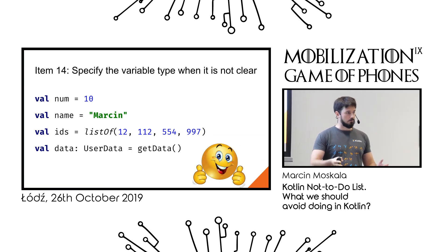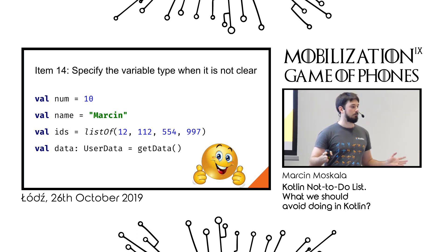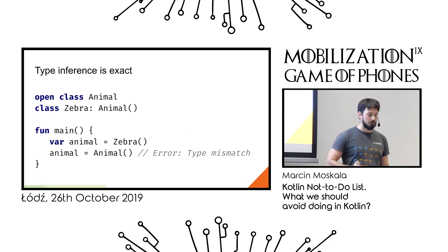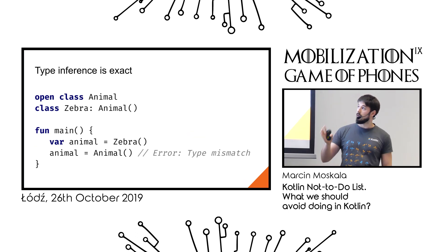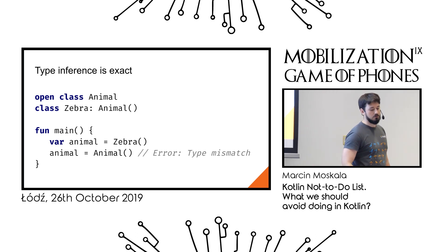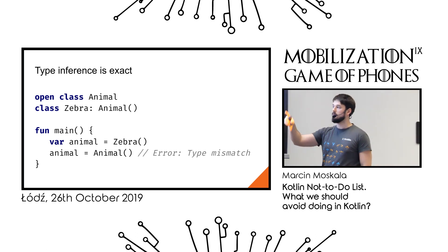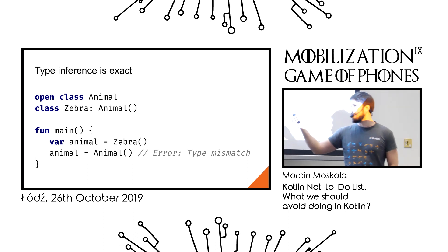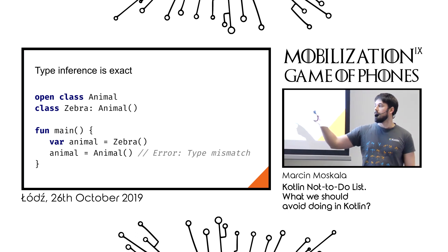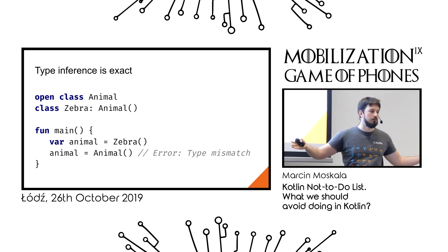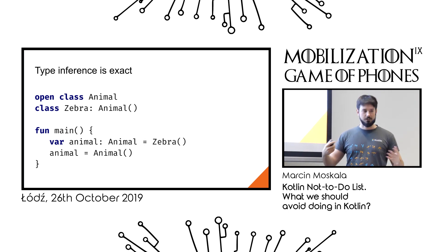Types are important information for readers, but they are also important for the compiler. One problem is that type inference is exact. If you have a class Animal and class Zebra, and you set animal to a Zebra and infer the type, the inferred type is Zebra — so you cannot then assign a different animal. The solution is to set a less restrictive type.